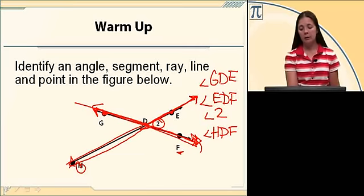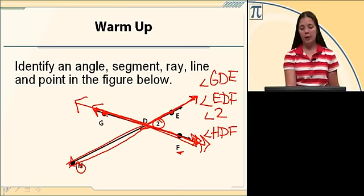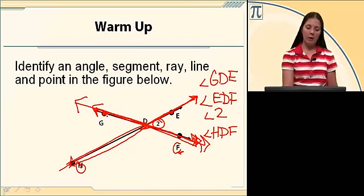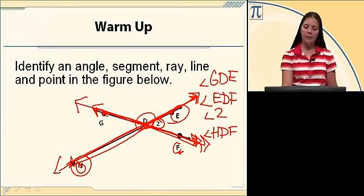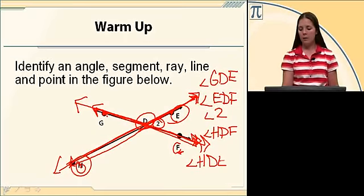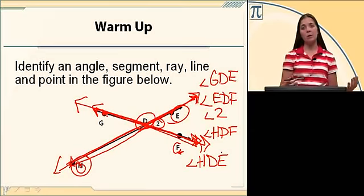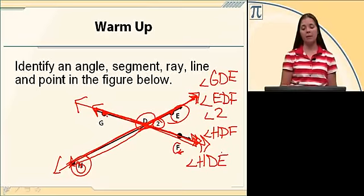If you saw the straight angle line here, that's fine: angle GDF or angle FDG. The other straight angle we have is angle HDE — all these angles could also be named in the exact reverse order, like EDH, as long as D is in the middle because D is the vertex.